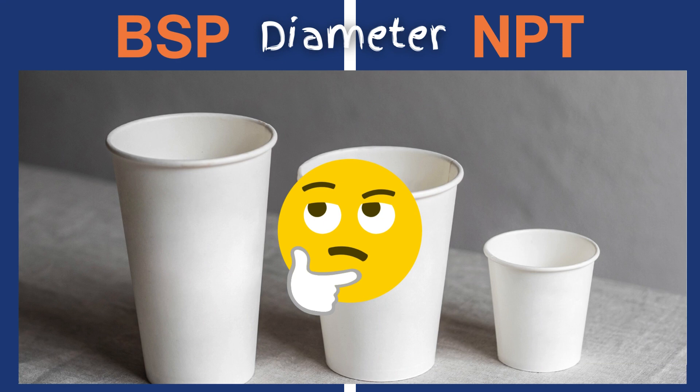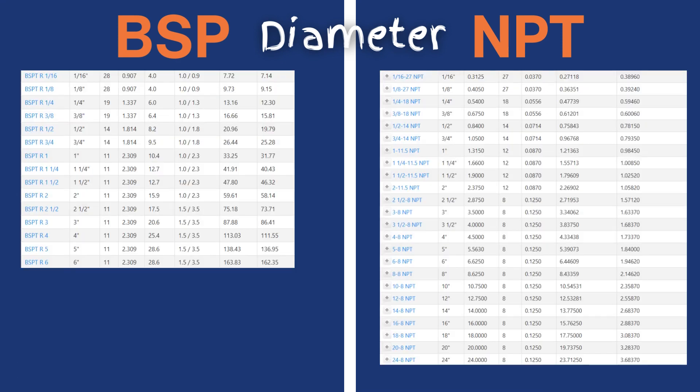What about the selection of sizes? Both start at 1/16th inch, and the list is nearly identical up to 6 inches. BSP stops here, while NPT features larger sizes, up to 24 inches.